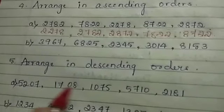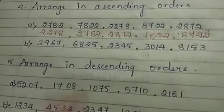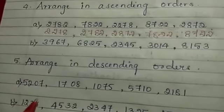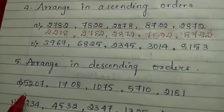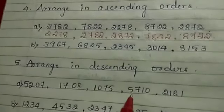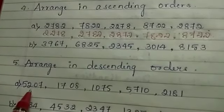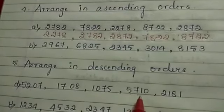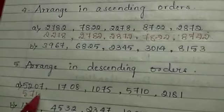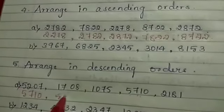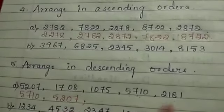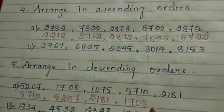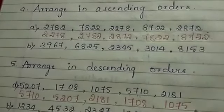Next: descending order — from the biggest number to the smallest. Looking at the numbers, two start with 5. After 5, we compare the second digit: 7 is bigger than 2, so 5710 comes first, then 5207. Then 2181, 1708, and finally 1075.